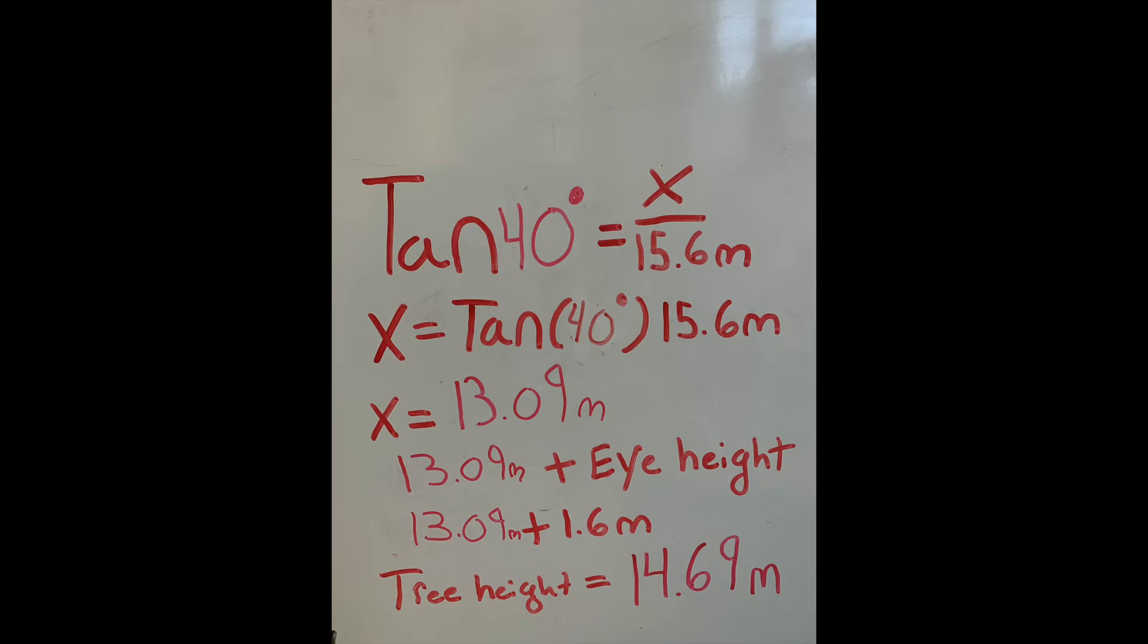We're going to rearrange this formula to make it make more sense. So we're going to change it to x equals tan in brackets 40 degrees close brackets times 15.6 meters. Then you're going to type that into your calculator and you're going to get a measurement of 13.09 meters. However, we're not done here.